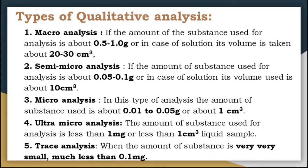The amount of substance used for qualitative analysis determines its type; qualitative analysis can be divided into five main types depending on this amount. The first is macro analysis. Here, the amount of substance used for analysis is about 0.5 to 1 gram, or if a liquid substance is used, up to 20 to 30 cm³ of that liquid. This method is easy to follow in a laboratory, but uses large quantities of chemicals.